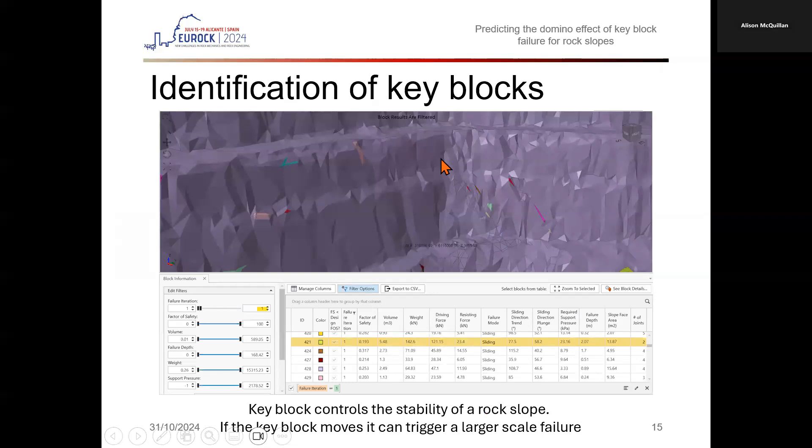Analyzing in True 3D, we can also identify key blocks, where key blocks are defined as blocks that control the stability of a rock slope. That is, if the key block moves, a larger scale failure can be triggered.